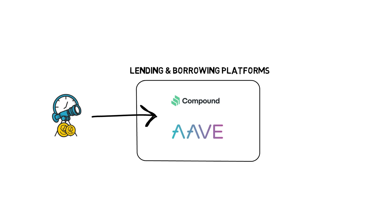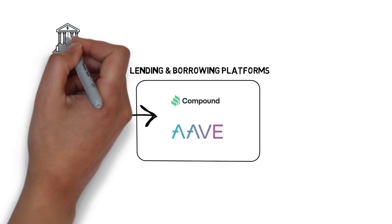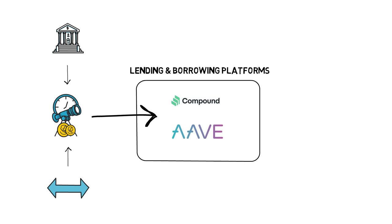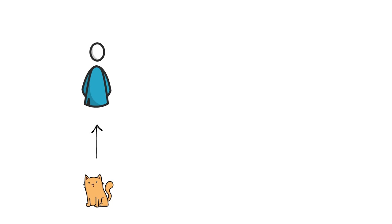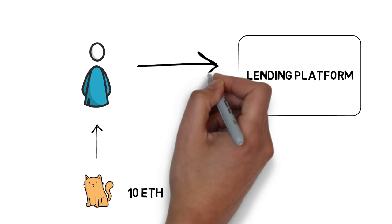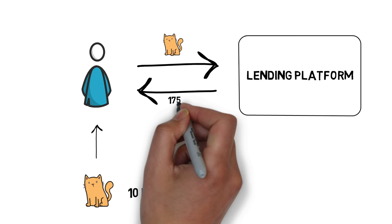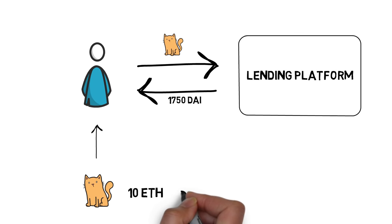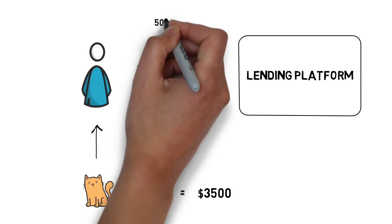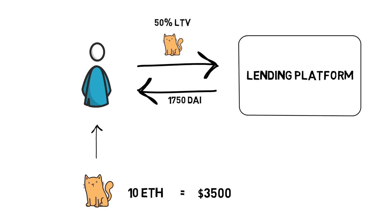These oracles aggregate prices from multiple liquid sources such as centralized and decentralized exchanges. When it comes to NFTs, the markets for particular tokens are very often illiquid, which makes the price discovery process tricky. Imagine someone buys a rare CryptoKitty for 10 ETH. This NFT is later used as collateral and the borrower draws 1,750 DAI, assuming that 10 ETH is worth $3,500 and this particular NFT has 50% loan-to-value. If no one else is willing to buy this particular CryptoKitty, we can say that the market for this NFT is illiquid or even non-existent.